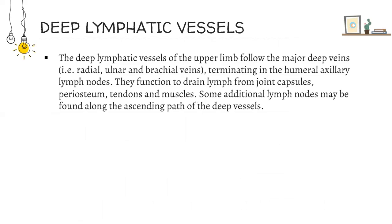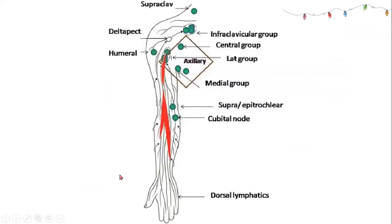Deep lymphatic vessels. The deep lymphatic vessels of the upper limb follow the major deep veins — radial, ulnar and brachial veins — terminating in the humeral axillary lymph nodes. They function to drain lymph from the joint capsules, periosteum, tendons and muscles. Some additional lymph nodes may be found along the ascending path of the deep vessels. In this image we can see dorsal lymphatics, cubital nodes, the medial group, axillary nodes, central group, infraclavicular group, and deltopectoral and humeral nodes.